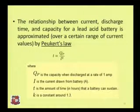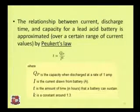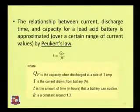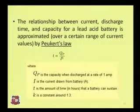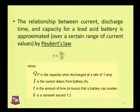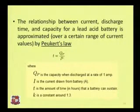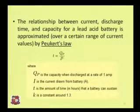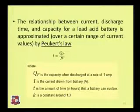By Peukert's Law, which shows the relationship between current, discharge time, and capacity of a lead acid battery, it is given by t = Qp / I^k, where Qp is the capacity of the battery when discharged at a rate of 1 ampere, I is the current drawn, t is the time in hours the battery can sustain, and k is a constant.